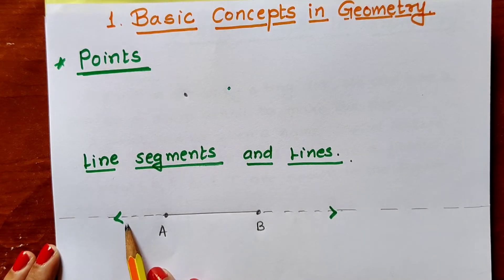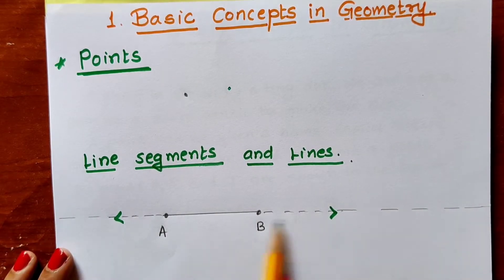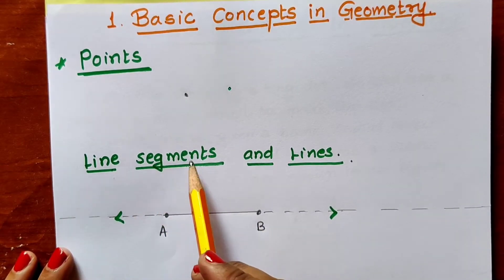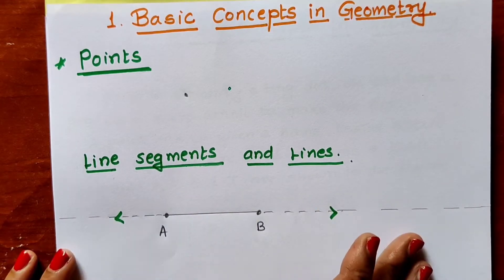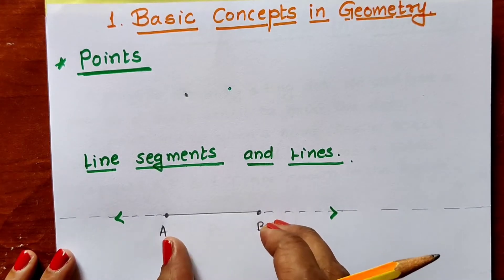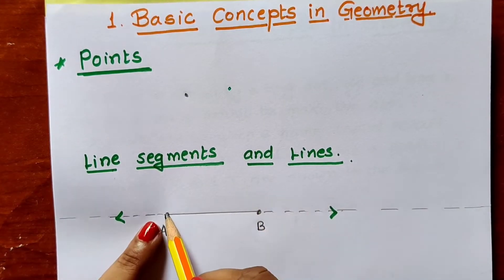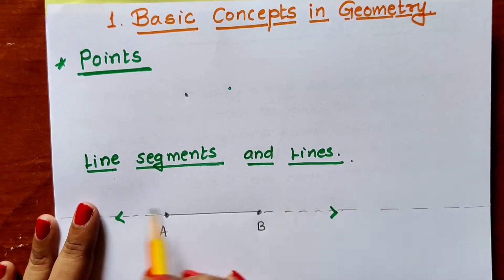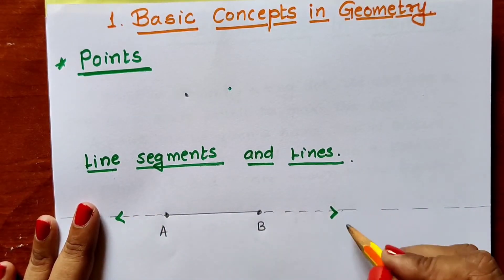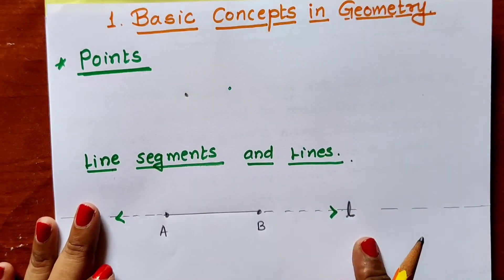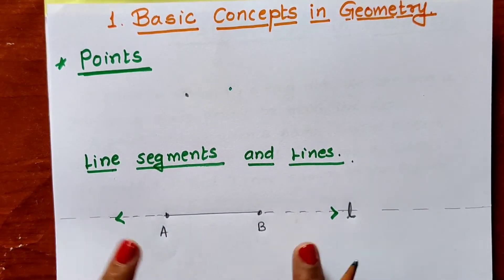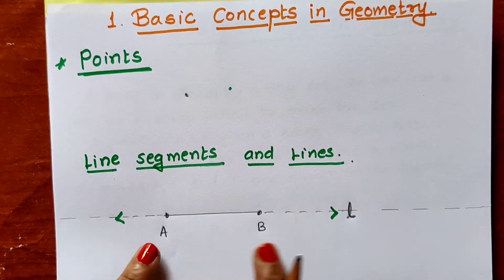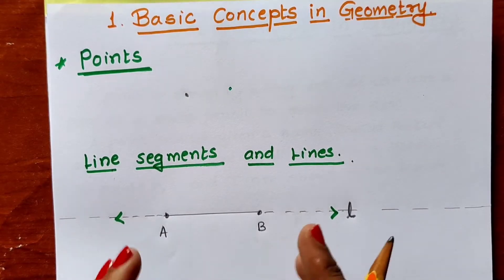If a line is a straight line that can be extended in both directions, then what do we mean by line segment? A line segment is a piece or segment of a line. For example, AB is a piece of line AB. If I show the long line by small letter L, this is line L. And segment AB is the part or piece of line L.